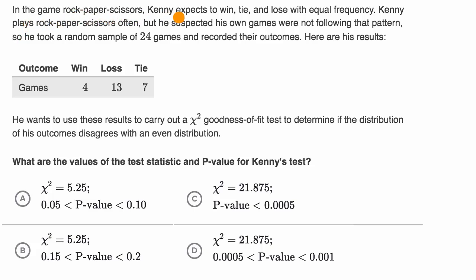In the game Rock, Paper, Scissors, Kenny expects to win, tie, and lose with equal frequency. Kenny plays Rock, Paper, Scissors often, but he suspected his own games were not following that pattern. So he took a random sample of 24 games and recorded their outcomes. Here are his results. So out of the 24 games, he won four, lost 13, and tied seven times. He wants to use these results to carry out a chi-squared goodness of fit test to determine if the distribution of his outcomes disagrees with an even distribution.